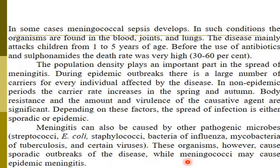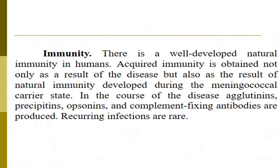There is well-developed natural immunity in humans, especially in immunocompetent persons. Acquired immunity is obtained not only as a result of the disease but also during the meningococcal carrier state. In the course of the disease, agglutinins, precipitins, opsonins, and complement-fixing antibodies are produced. Recurring infections are rare.